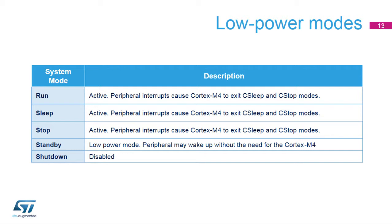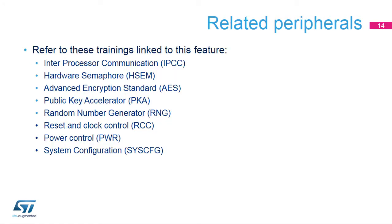When needed, the BLE peripheral interrupts and wakes up the Cortex-M4 from C-Run, C-Sleep, and C-Stop modes. In addition to this training, you may find the Flash Memory Interface and System Configuration trainings useful.